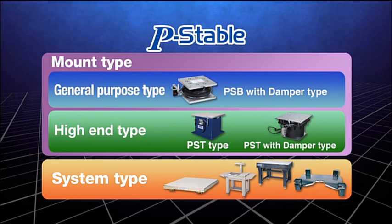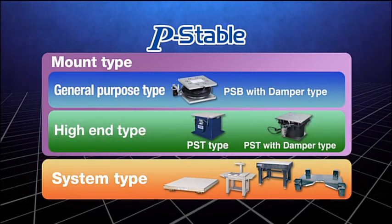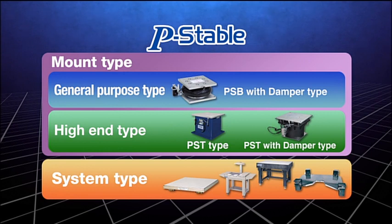The passive vibration isolation system e-stable has a versatile lineup suited for different needs, such as the general purpose mount type PSB, the high-end mount type PST, desktop types, and table and system types such as platform types.